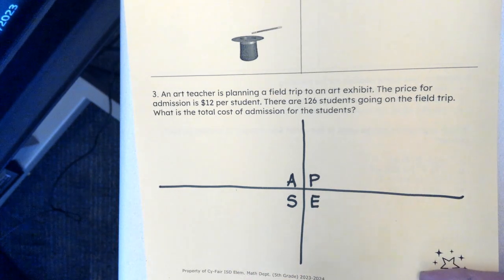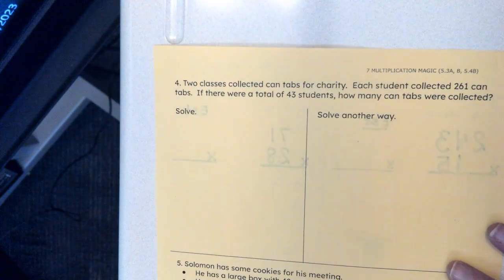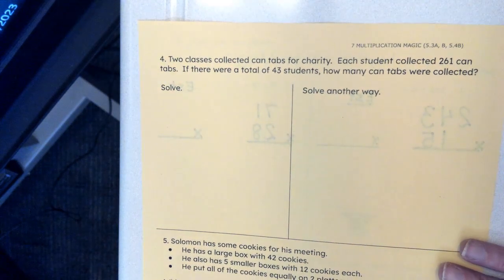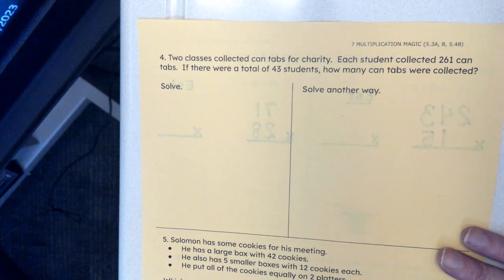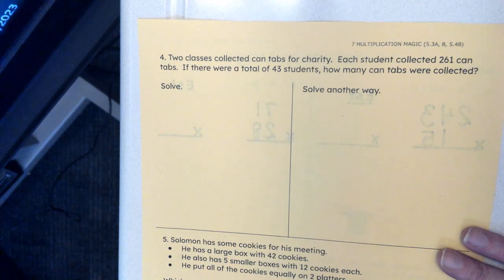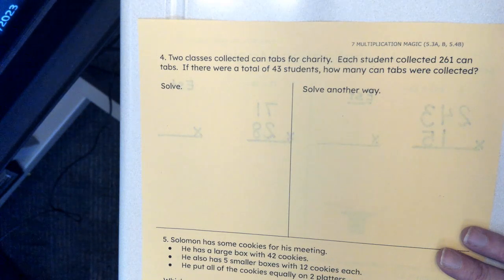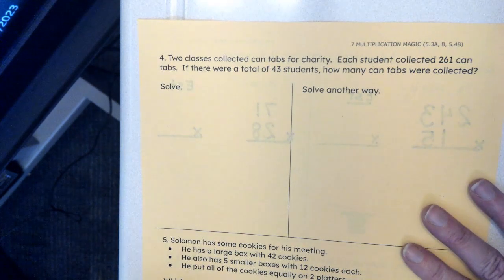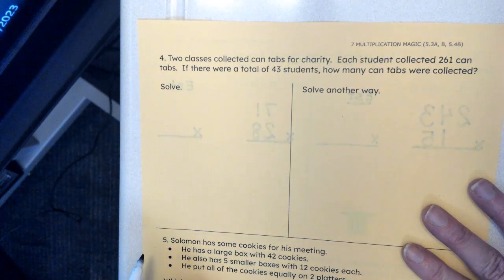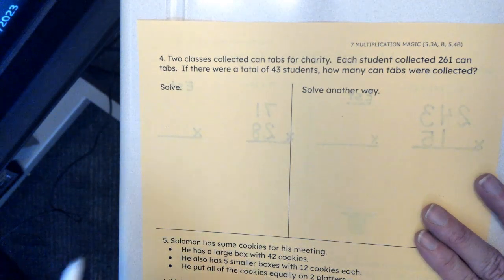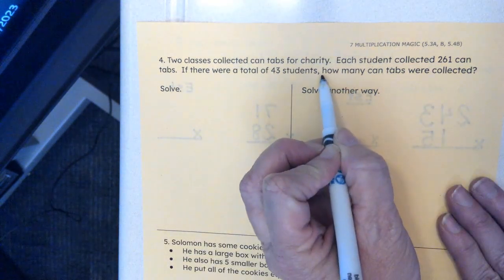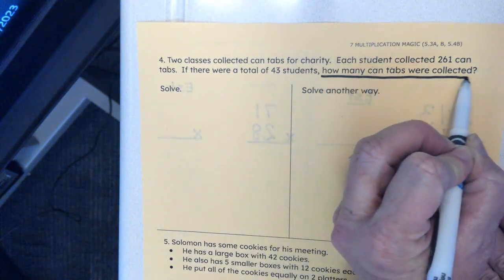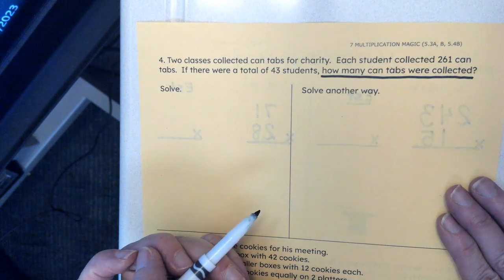Turn over to the back. On the back we have: Two classes collected can tabs for charity. Each student collected 261 can tabs. If there were a total of 43 students, how many can tabs were collected? So for this problem, I want you to acknowledge that we're trying to find the number of can tabs that were collected.